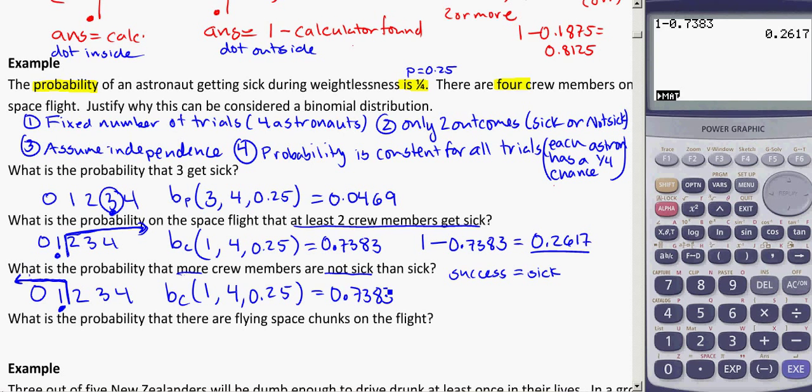All right. What is the probability that there are flying space chunks on the flight? So this means, what's the probability that at least one person got sick on the flight? Really because it doesn't matter how many people put some debris into space. As long as one of them does, that counts. So here, diagramming out my sample space, what is the probability that we do have flying space chunks on the flight? That means, well, one person could have been sick, two, three, or all four could have been sick.